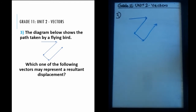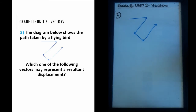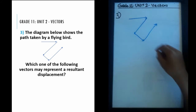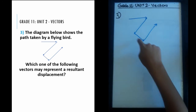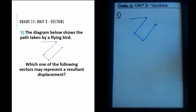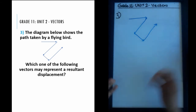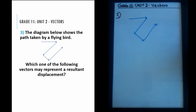Let me redraw the diagram: a horizontal line, then a line going this way, then one going another direction, then one going up. This diagram uses vectors — arrows — to represent the bird's path. Arrows are the perfect representation of vectors because they show both magnitude and direction. To find the resultant displacement, we need to find a vector with both magnitude and direction.